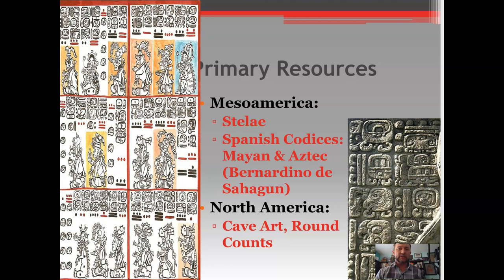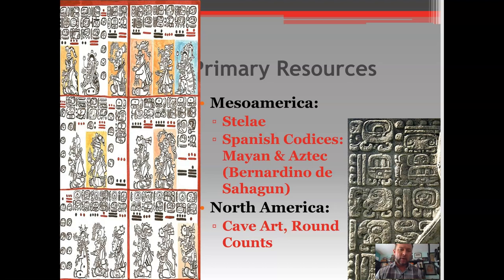On a stela, a line represents five years and a dot above it represents one year, so a line with three dots means eight years, and so on. A gentleman named Michael Coe helped illuminate to the world the cracking of the Mayan code. We now feel rather confident that we can discern many of the hieroglyphic writings, though there is still plenty that remains in the dark.